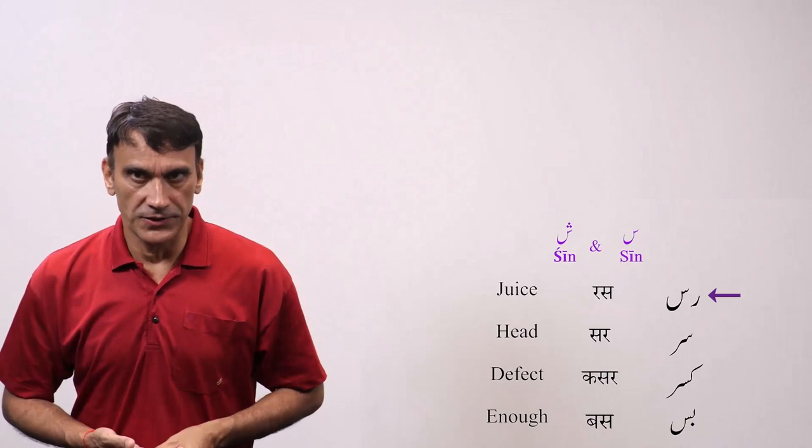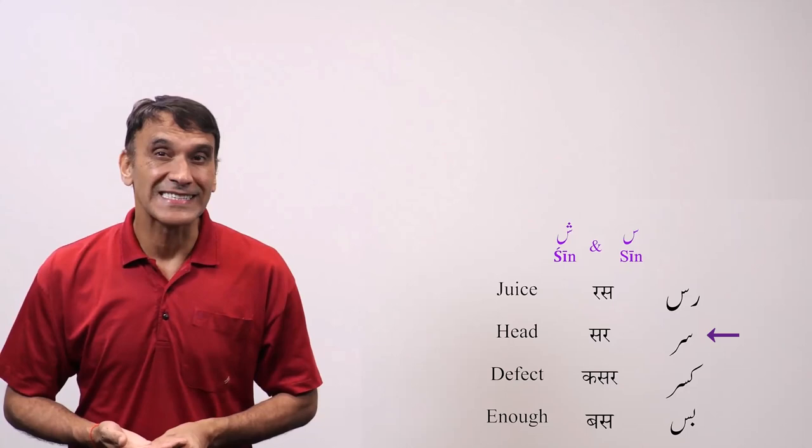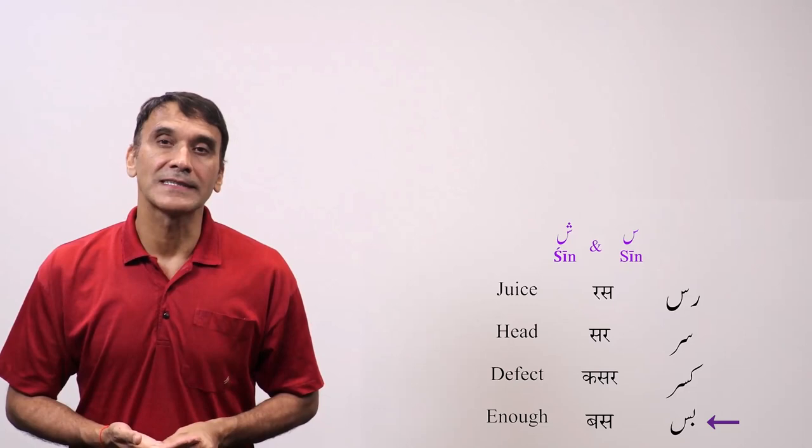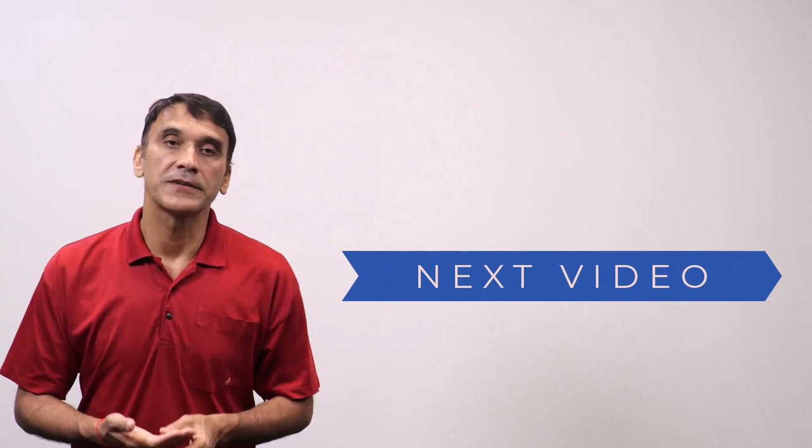At the end, here are all the words we have taken in this video. The first one is ras where seen is detached. The second word is sir where seen comes as initial letter. The third word is kasar. Here seen is in between two letters and takes the medial form. And the last word is bus where the letter seen takes the final form because it is the last letter of the word.